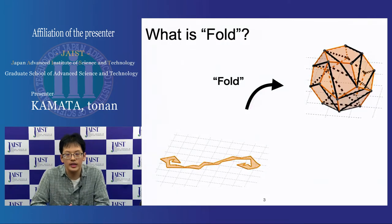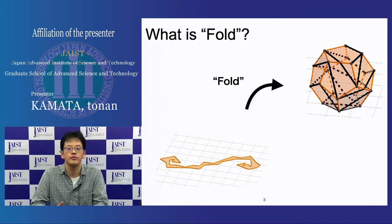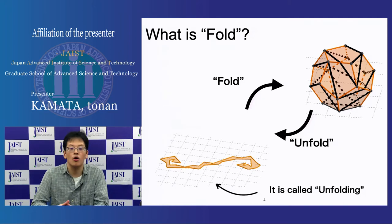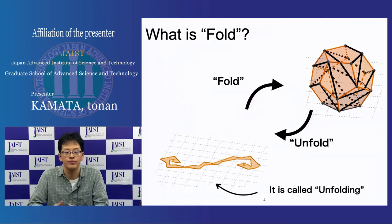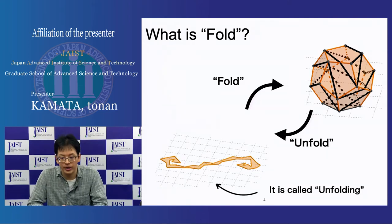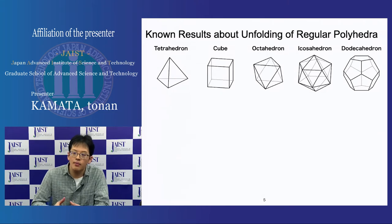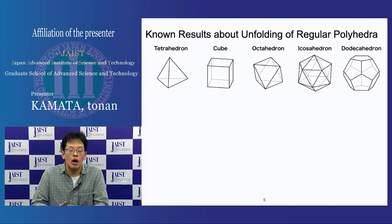The term fold is an operation to make a polyhedron from a polygon. The obtained polygon is called an unfolding. Five regular polyhedra are one of the most basic classes of polyhedra. For unfoldings of them, there are some results.